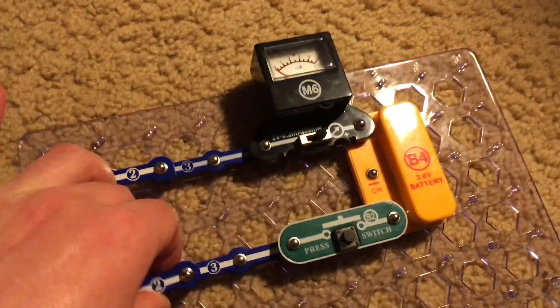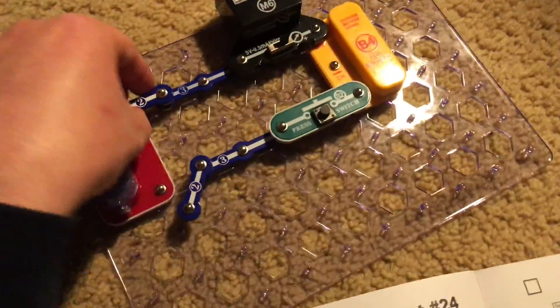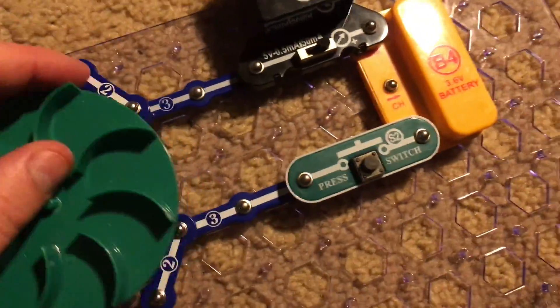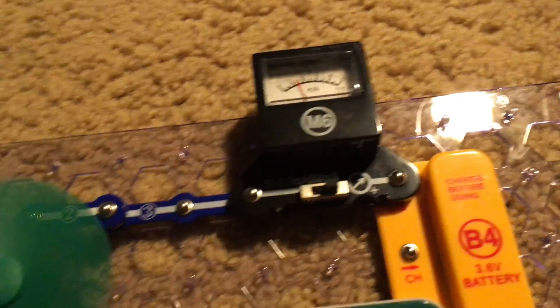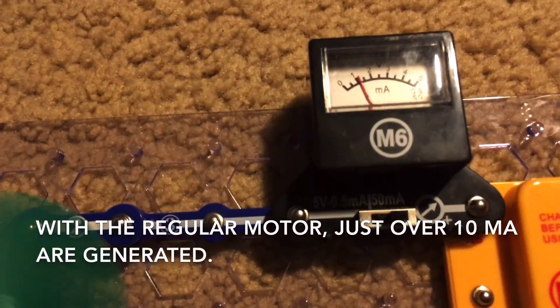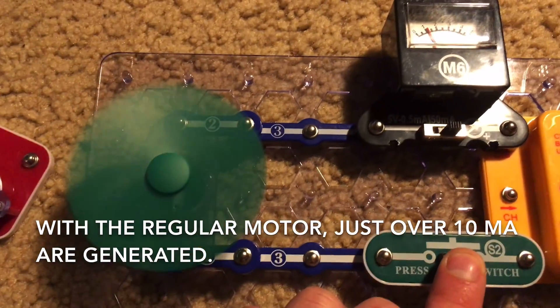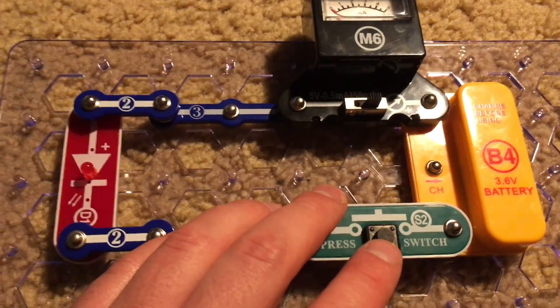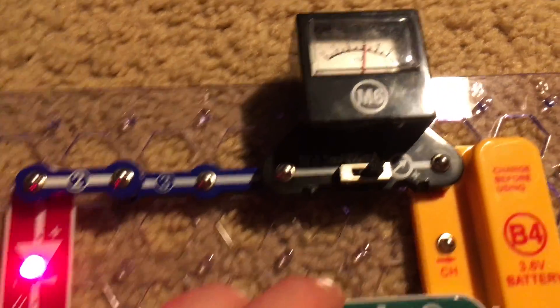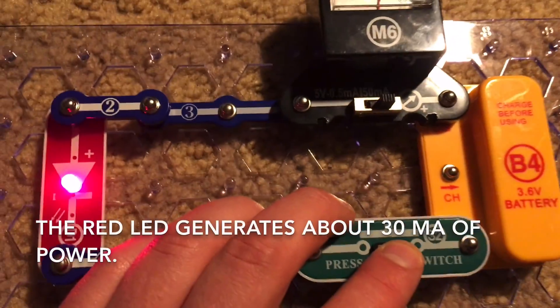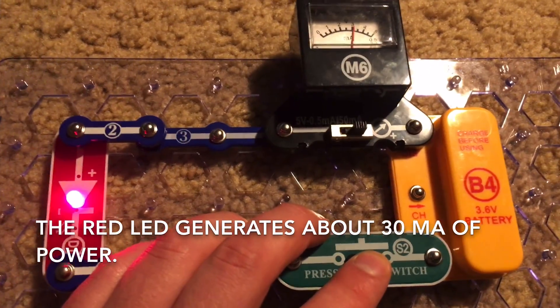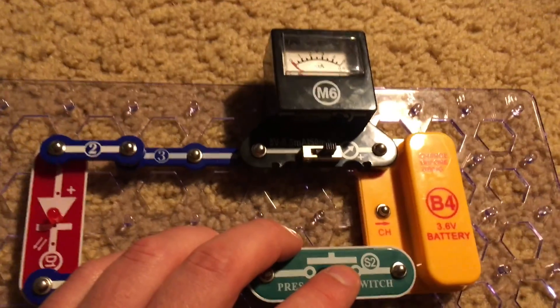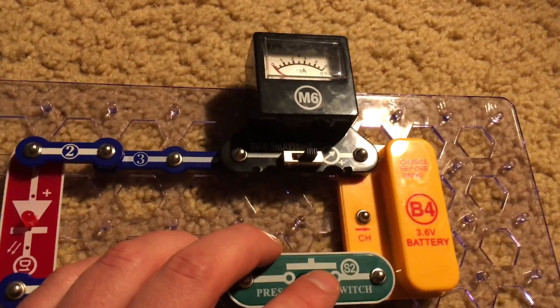Now we can replace the hand crank with the motor. Look, when the motor spins just over 10 milliamps are generated. The motor is not as powerful as the hand crank. Now let's try the red LED. About 30 milliamps are generated when it's on. So of these three components, the hand crank is definitely the most powerful because it reads about 45 milliamps when it's on.